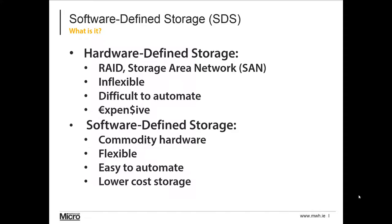If you buy a SAN from company A, you have to buy your disks from company A, and they charge a premium for those disks and firmware. Software-defined storage, or SDS, uses commodity hardware — you're not locked into a single vendor. It's flexible: you can buy a JBOD from one company, disks from another, SSDs from another, and SAS cards from another. A good JBOD manufacturer will have an HCL recommending specific models. The solution is easy to automate using Windows Server, PowerShell, or System Center, and the entire solution is lower-cost storage.